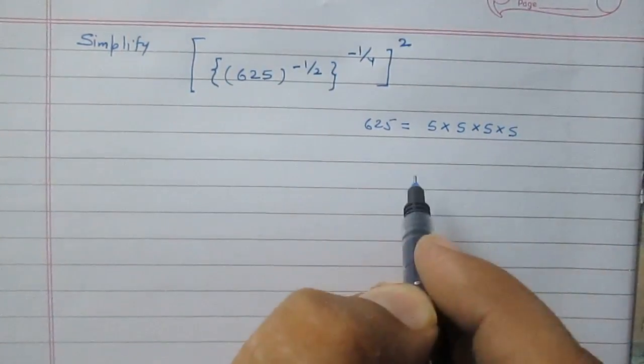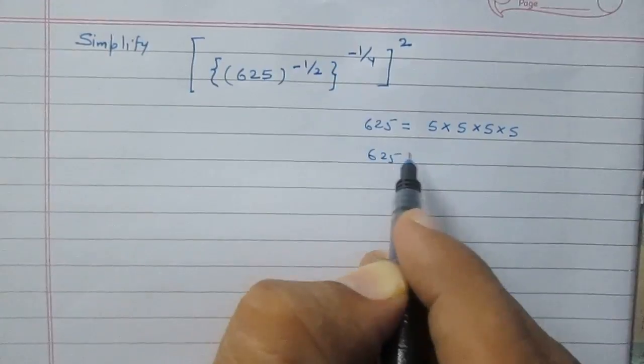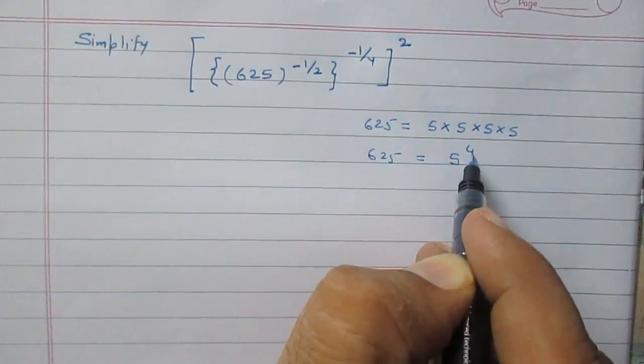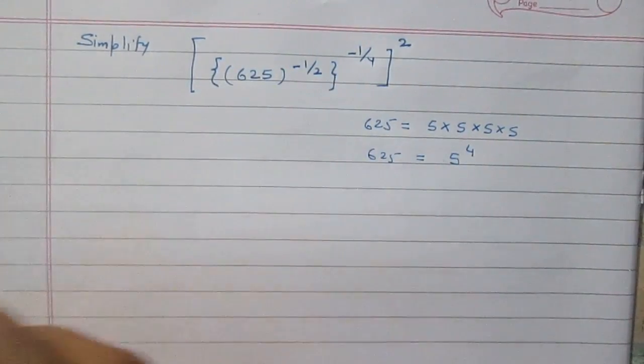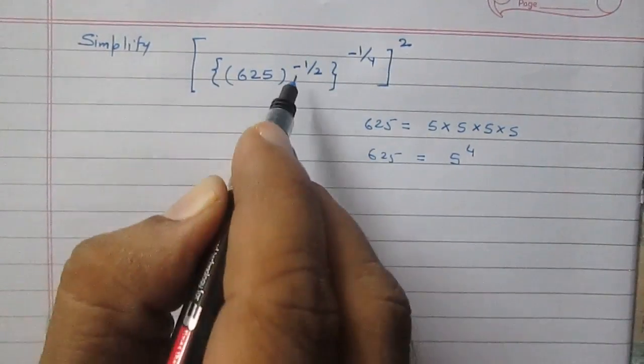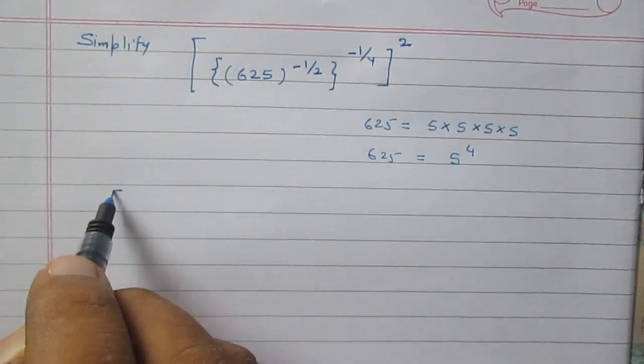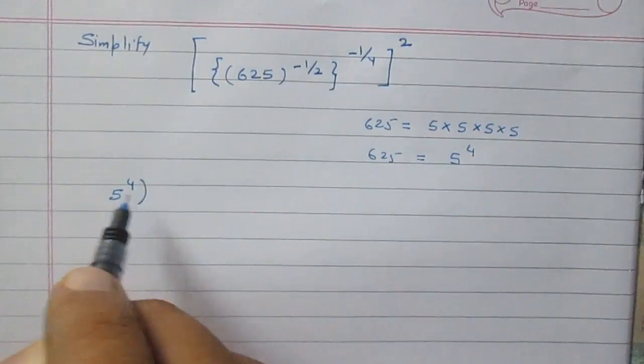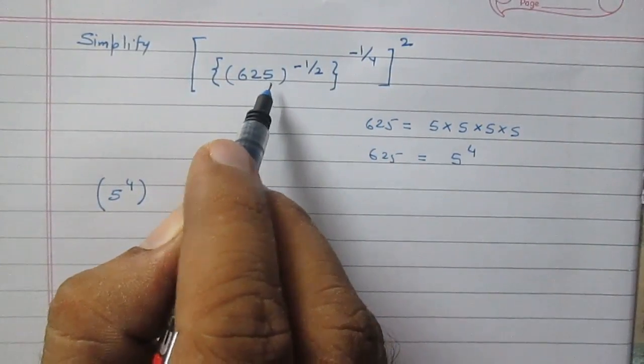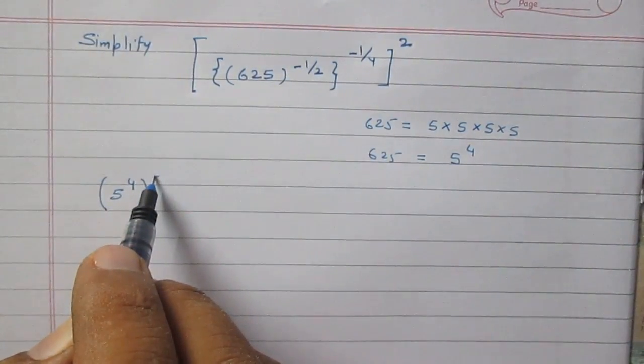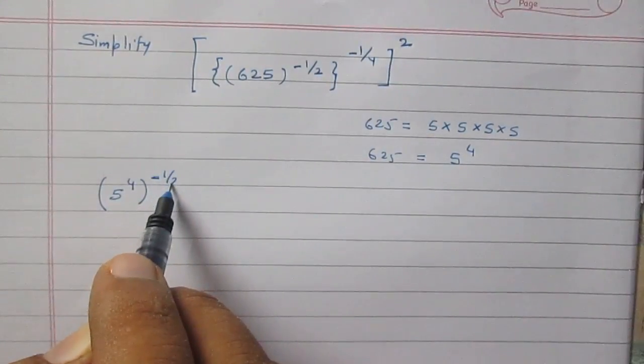So 625 can be written as 5 raised to the power 4. We can write this quantity as 5^4, then raised to the power -1/2, then raised to the power -1/4, and the whole raised to the power 2.